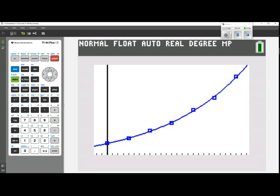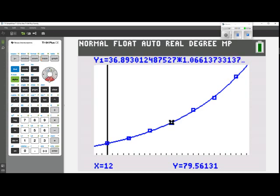And now we're going to use the trace feature to determine how long it takes for the bacteria count to double. So I'm going to press trace, and then I'm going to use my arrow down button to make sure that my cursor is actually on the model and not on the scatter plot. Now let's pick a value for x.